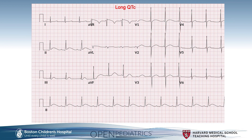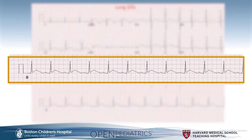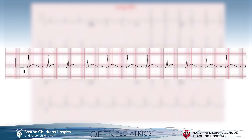Two EKG examples are shown. In the first example of a long QT, focusing on lead 2, you will see that the QT interval, if you were to eyeball it, ends beyond the halfway point between the R-to-R interval. If calculated, you would find it to be greater than 460 milliseconds, indicating a long QT. Additionally, this T wave is an early peaking T wave, more consistent with long QT type 1.